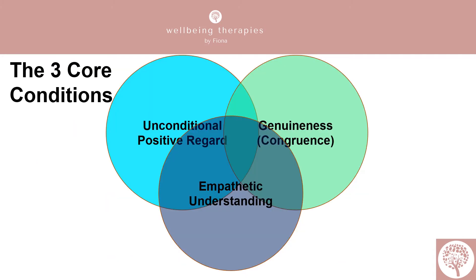Three core conditions are critical within person-centred therapy and must be present if the client is able to move forward. They are inextricably woven together, and the absence of one of these conditions can impact on the ability of a client to open up, talk about their story, and feel safe to explore the changes they want to make.